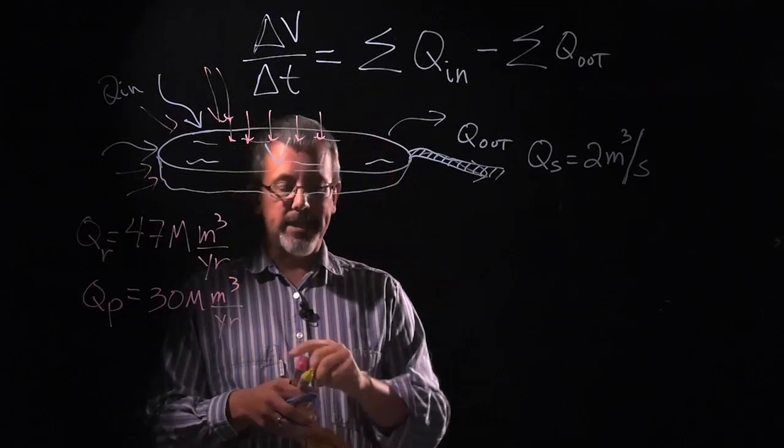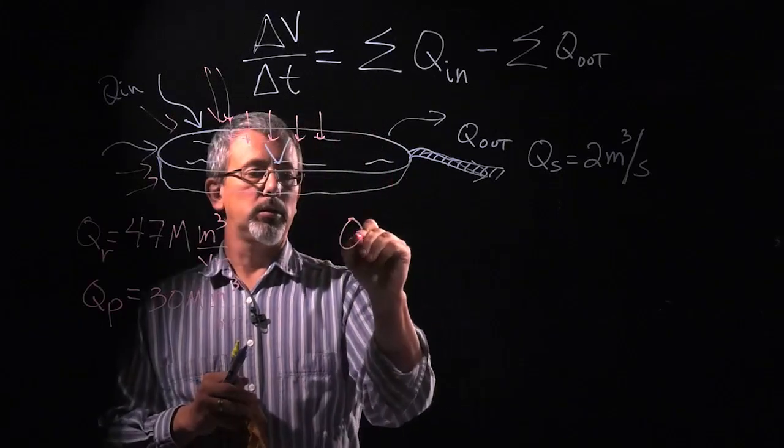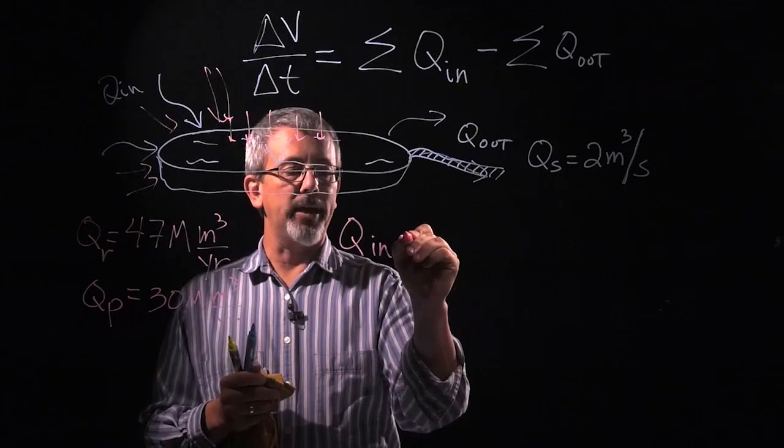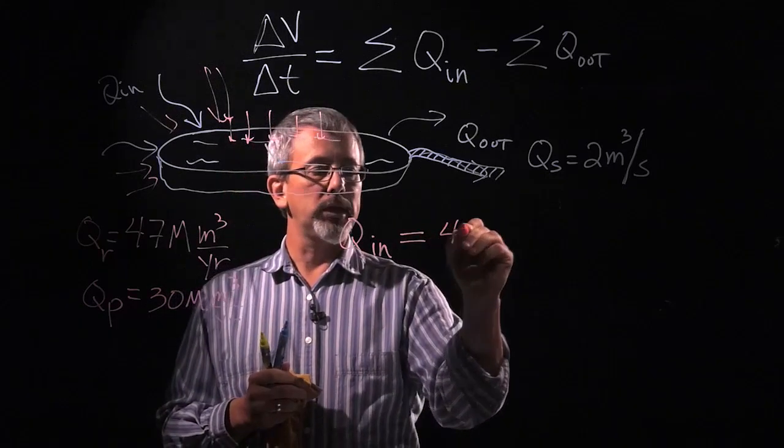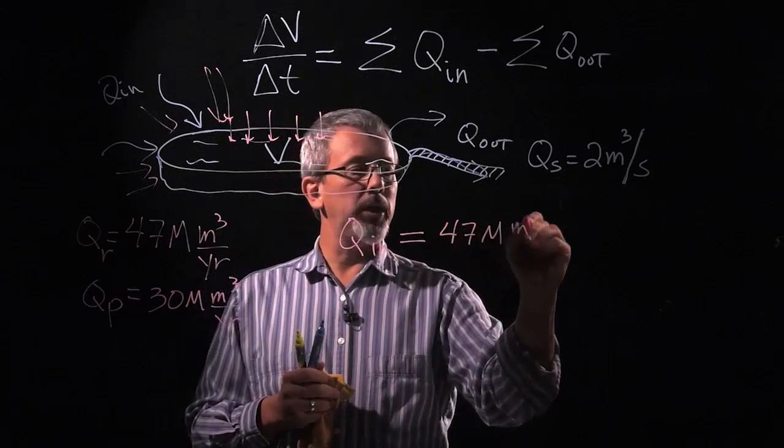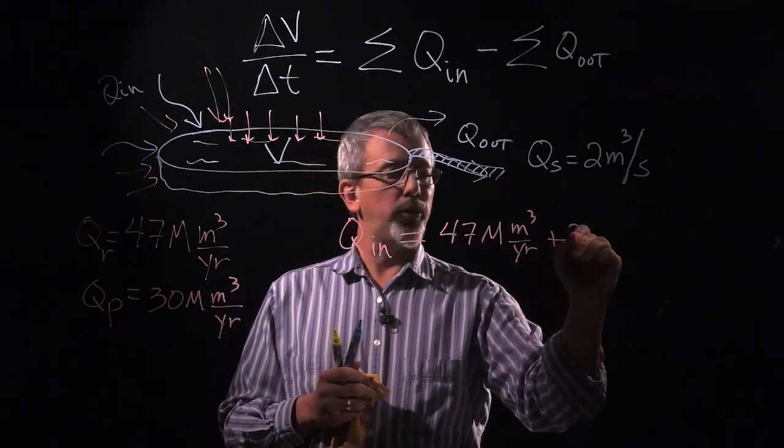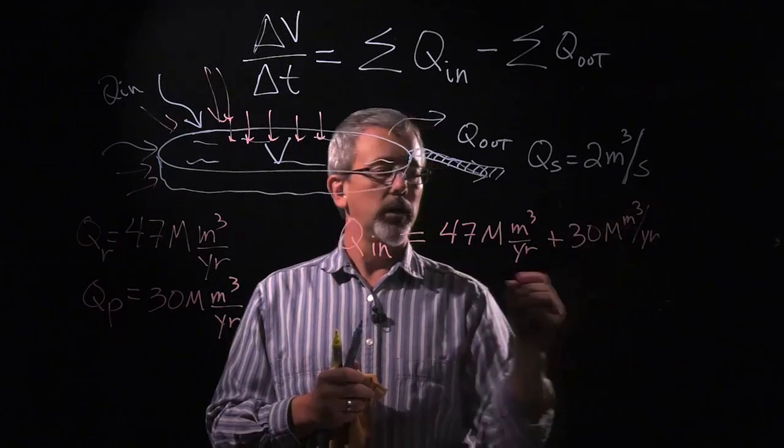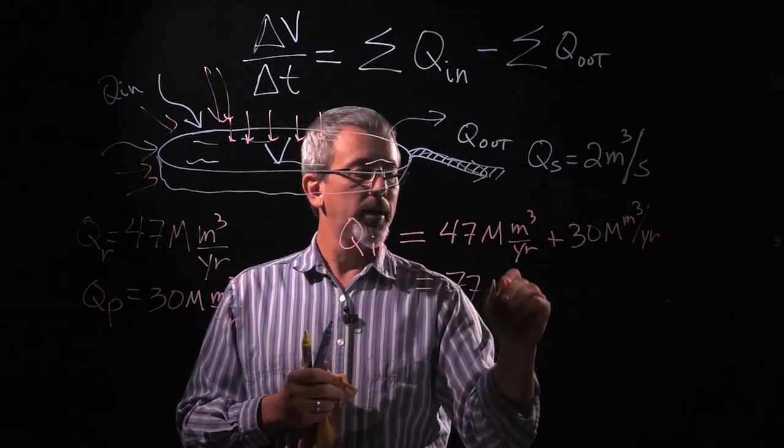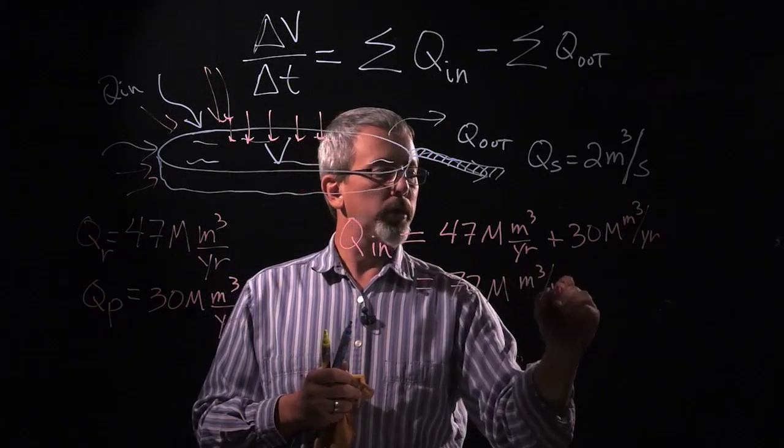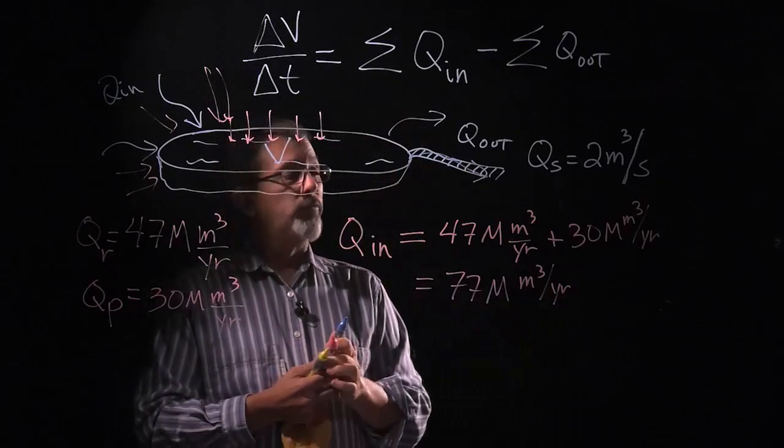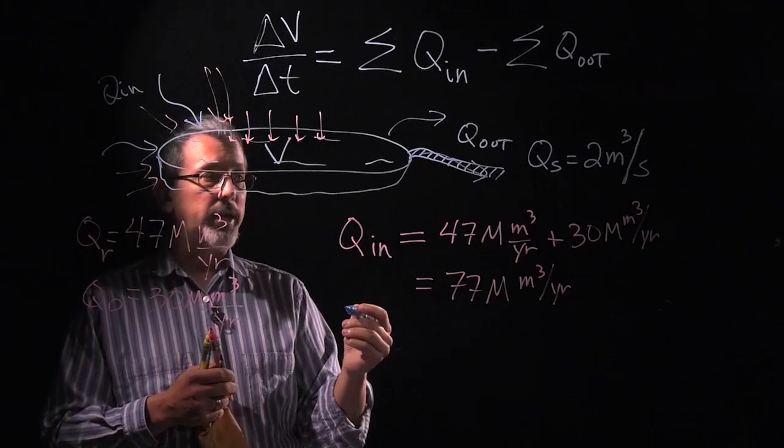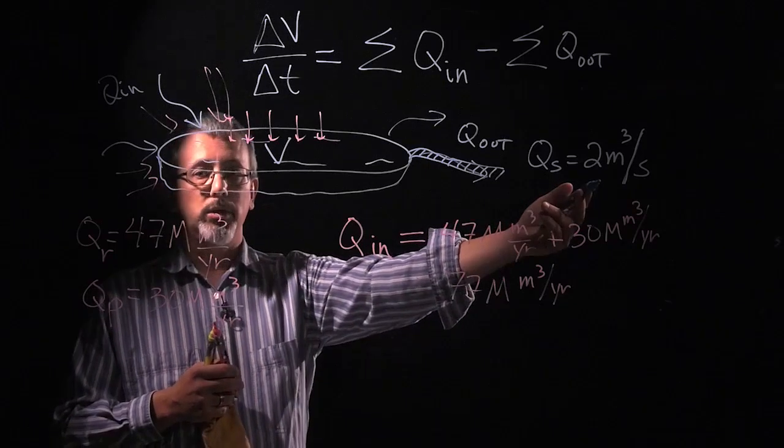Okay, so let's take the total of all the flow that's coming in, which is simply adding those two values, equals the 47 million meters cubed per year and adding the 30 million meters cubed per year. And we end up with a total of 77 million meters cubed per year. Well, if I want to compare the flows that are in and the flows that are out, what I want to do in this particular case is convert this to the same units.